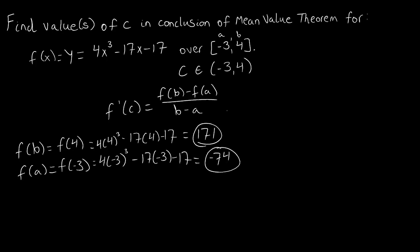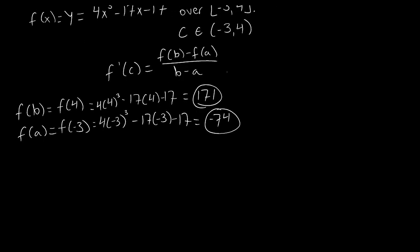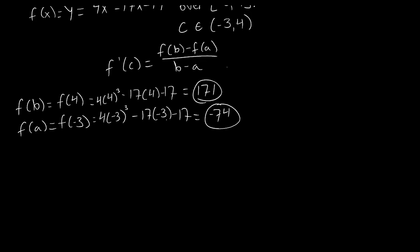So now for our case of this question, let's go ahead and plug in f(b), f(a), b, and a inside of our form, and let's see what we need to look for in terms of the derivative point that makes this statement true. So we're going to say f(b) minus f(a) over b minus a is the same thing as 171 minus (-74) over 4 minus (-3).